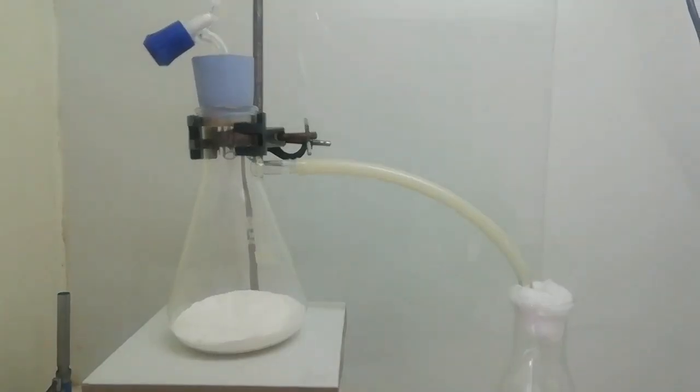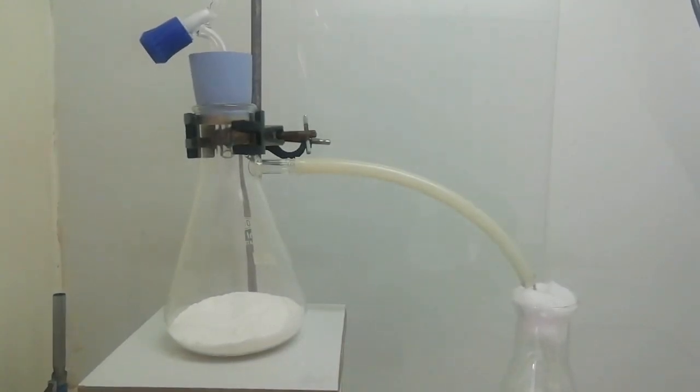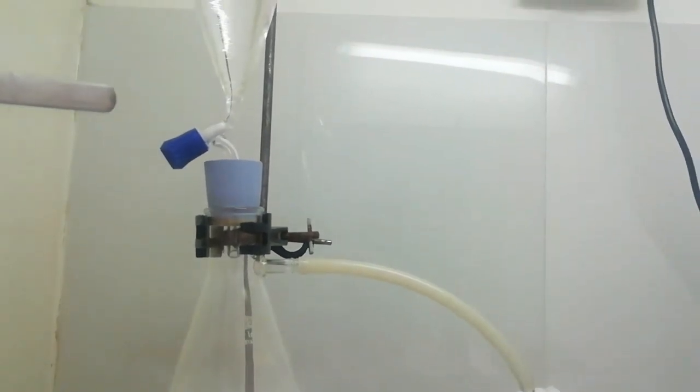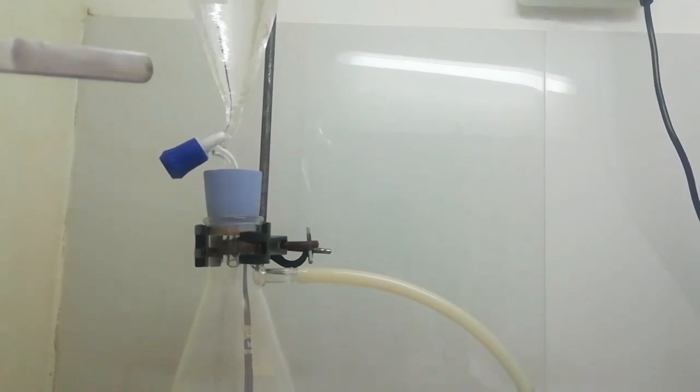So here is the setup. In this filter flask I have 40 grams of sodium metabisulfite, and in this separation funnel I have dilute hydrochloric acid.